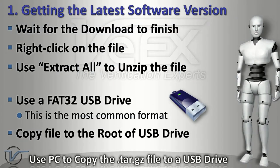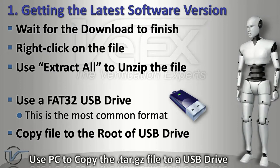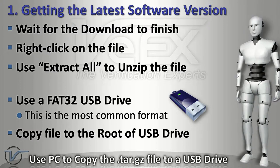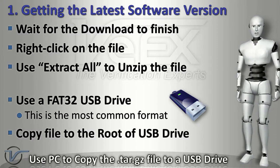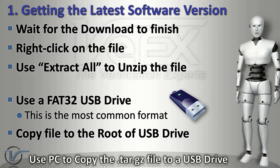Once the download process is finished, right-click on the zip file and select Extract All. The resulting image file will have a .tar.gz file extension. Insert the USB memory to the PC. Make sure it is a common FAT32 drive. Copy the image file to the root of the USB memory. Remove the USB memory stick from the PC.